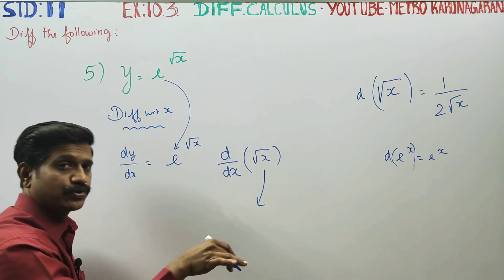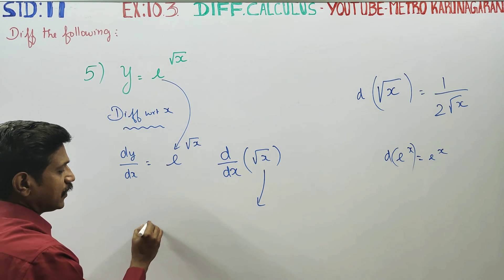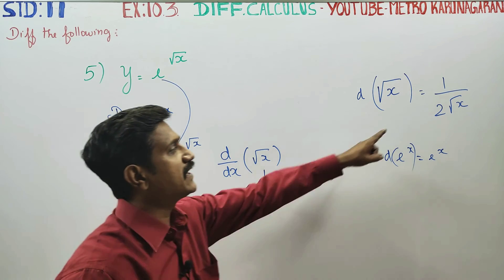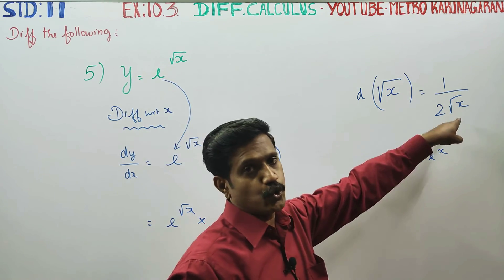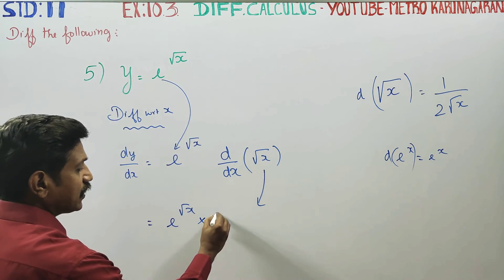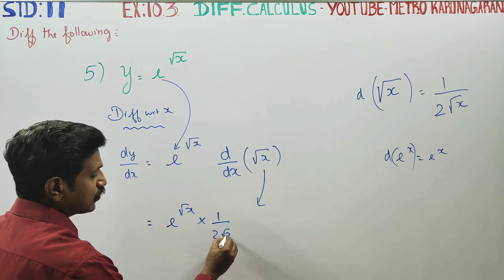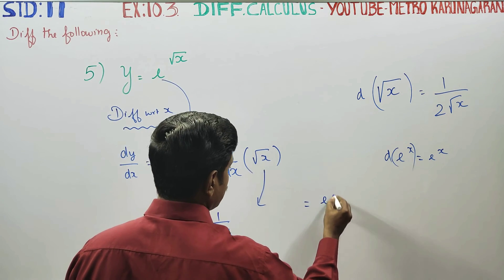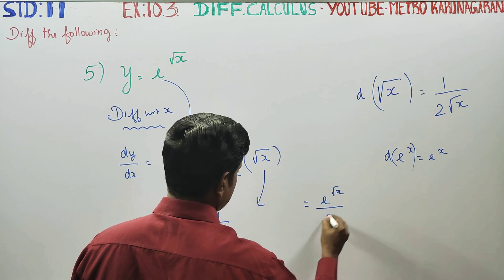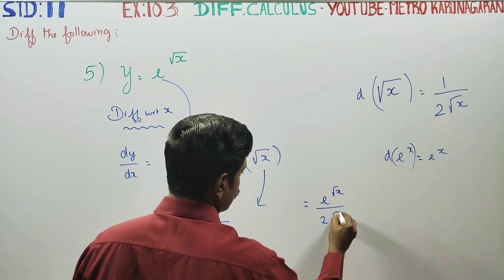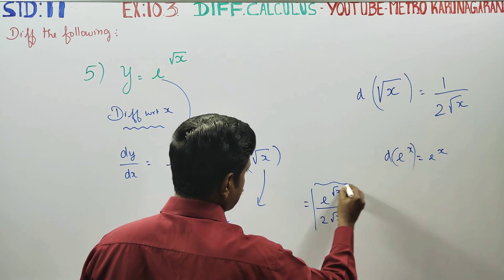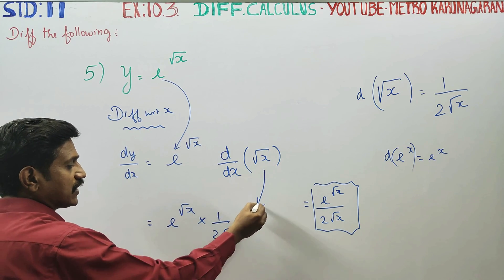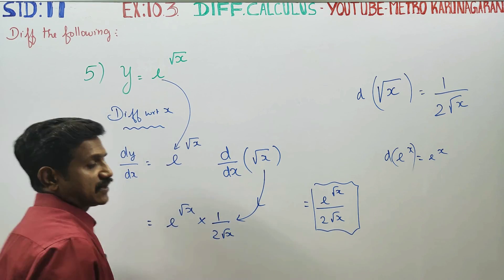When differentiating e power root x, using the chain rule, copy e power root x and multiply by the derivative of root x, which is the ready-made answer 1 by 2 root x. So your final answer will be e power root x by 2 root x. Chain rule: first keep e power root x, then differentiate root x to get 1 by 2 root x.